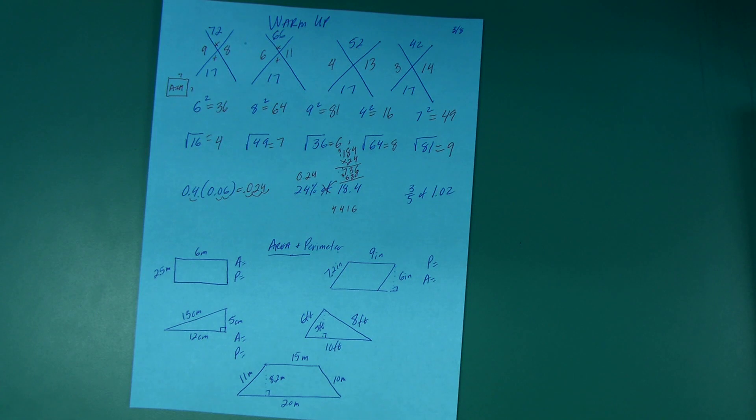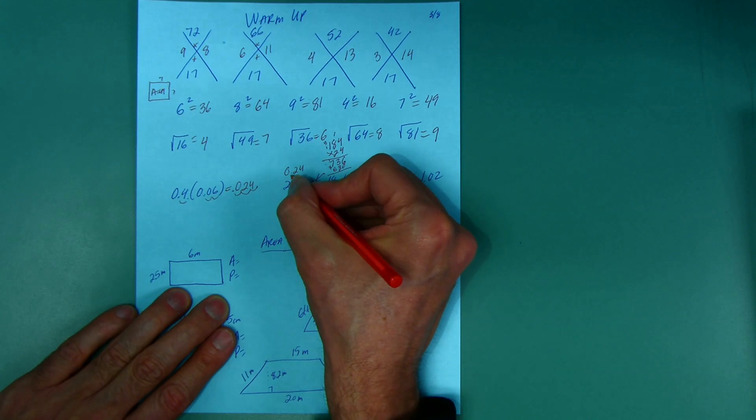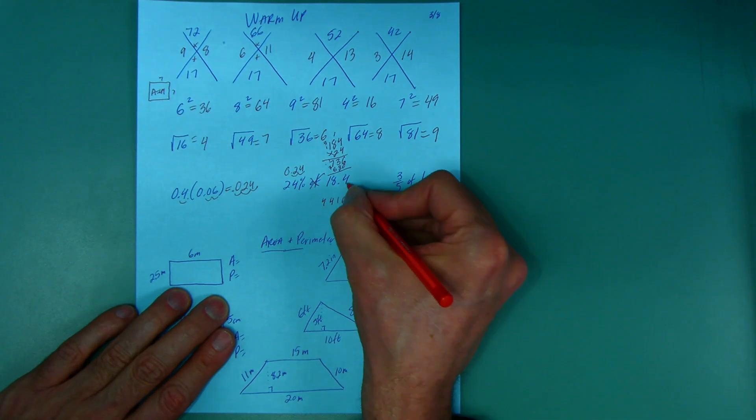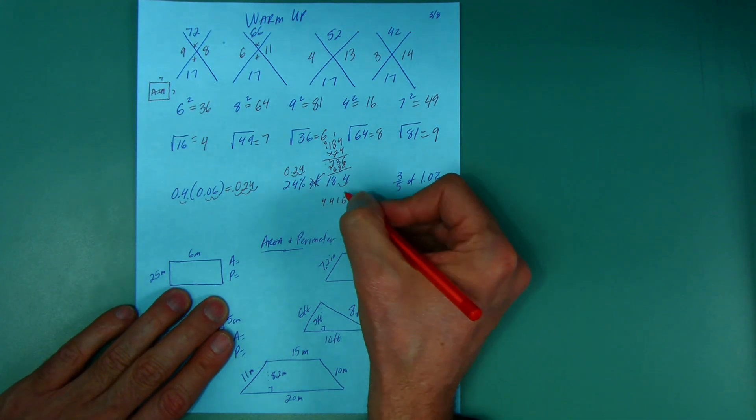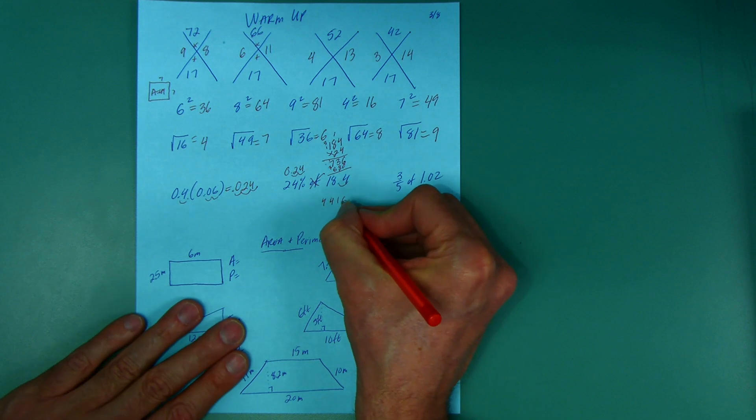But going back to my problem, I pretended this was a 24 by moving the decimal over 2 spots. I pretended this is 184 by moving over 1. That's a total of 3, so I go back 3 spots: 4.416. Put a box around it.